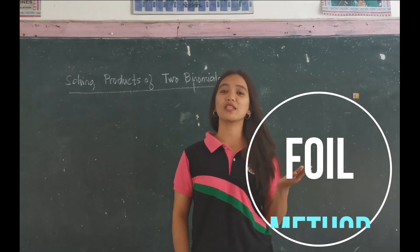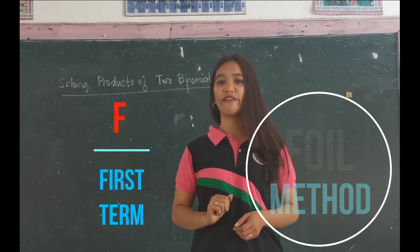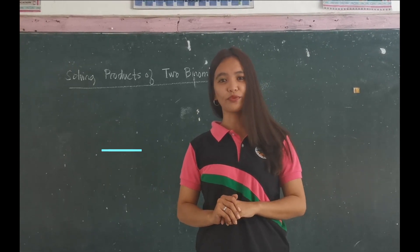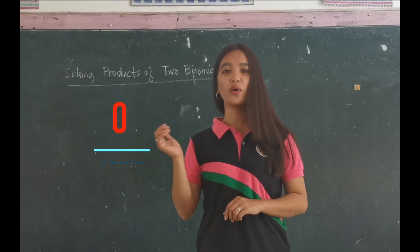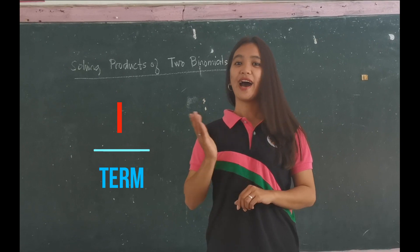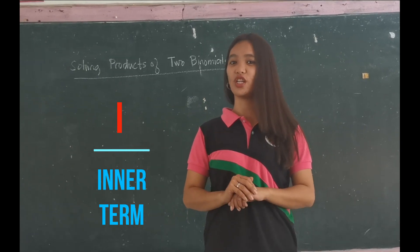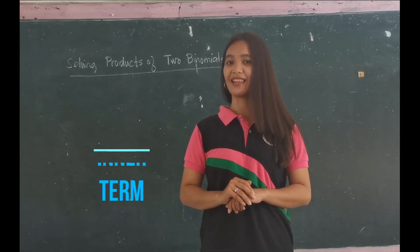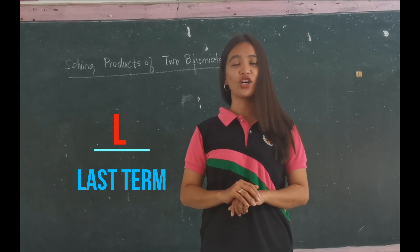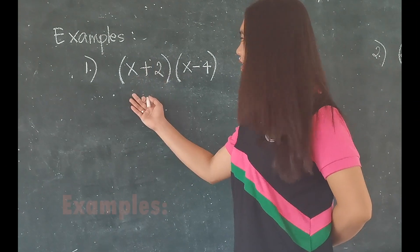What is the FOIL method? F stands for first term, O stands for the outer term, I stands for the inner term, and lastly, letter L stands for the last term.